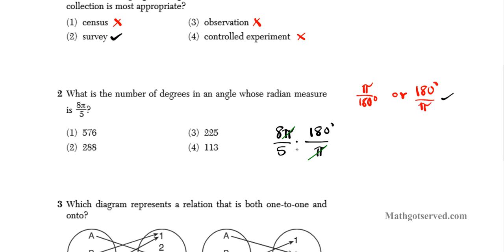Now we can reduce. 5 goes into 180: 5 goes into 18 three times which is 15, remainder 3, so 5 goes into 36 times. Then we have 8 times 36 is 288 degrees. So you can clearly see that our answer is option number 2.